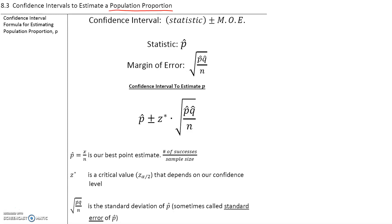By now, we know that the confidence interval is the statistic plus or minus the margin of error. In this case, our statistic will be p-hat, or the sample proportion. The margin of error will be given by the square root of p-hat times q-hat over n, where q-hat is equal to 1 minus p-hat.